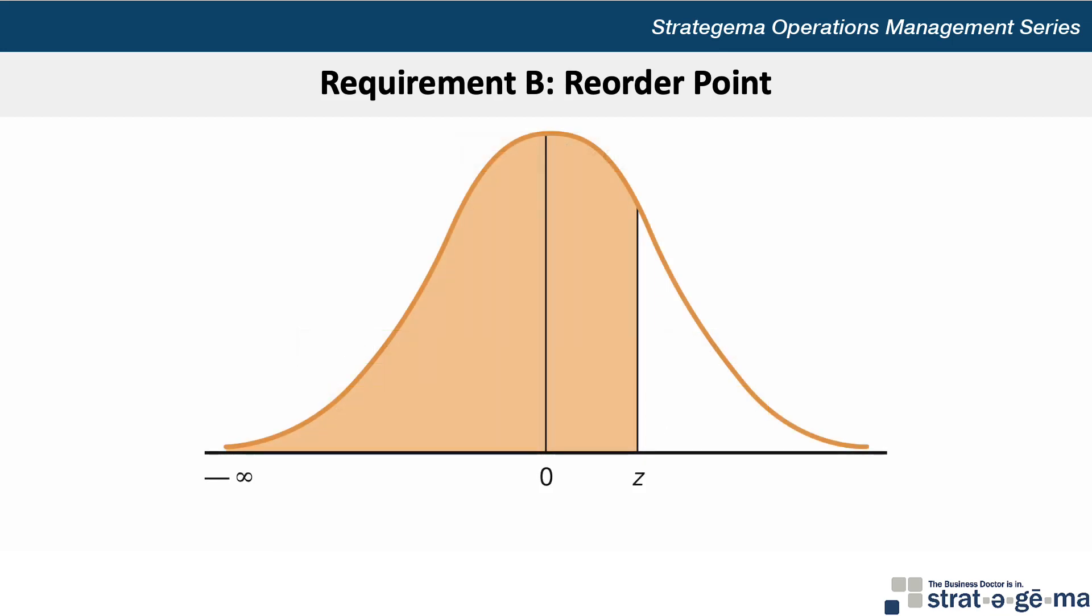If we translate this into a standard normal curve to help us determine what Z is, this is what we're looking at. The unshaded area under the curve represents the 12.65% probability of stocking out, and the shaded area under the curve represents the service level of 87.35%.